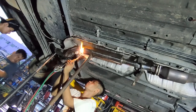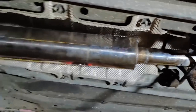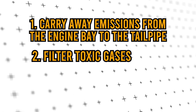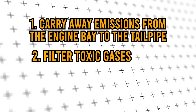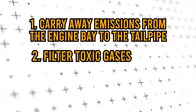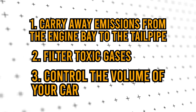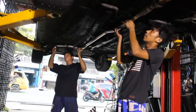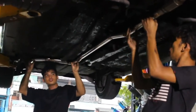Before we talk about exhaust leaks, remember when we talked about the purpose of your exhaust? Number one is to carry away emissions. Number two is to filter toxic gases. And number three, to control the sound and volume of your car. The most common exhaust problems you will encounter will probably revolve around these three purposes not being met.